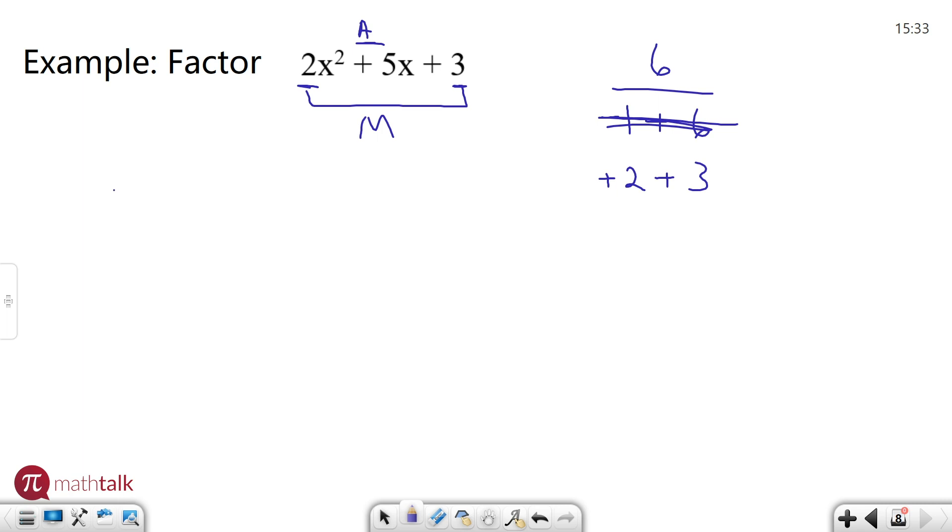I'm going to rewrite it a little bit. 2x² instead of plus 5x, I'm going to write it as plus 2x plus 3x, plus 2x plus 3x, and then plus three. The reason I can do that is because 2x plus 3x is the same thing as 5x. So you're just writing it differently. It's the same value.